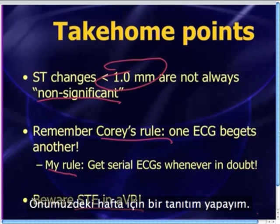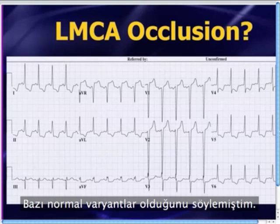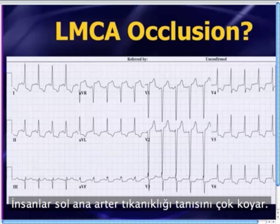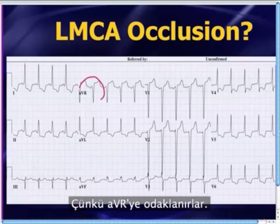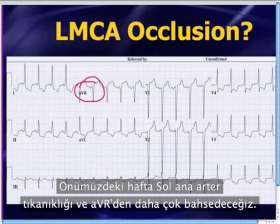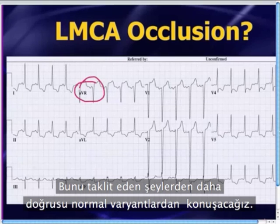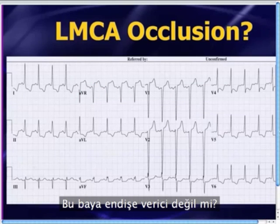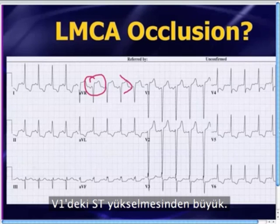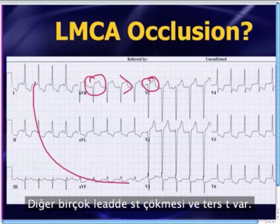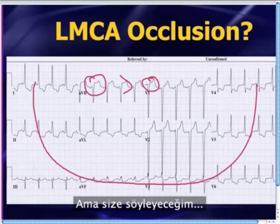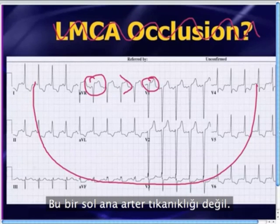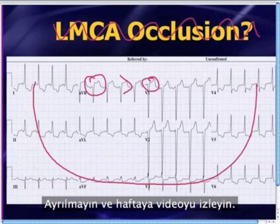Before we're done, a teaser for next week. There are some normal variants when you can have ST elevation in lead AVR, and this is oftentimes forgotten. People now have a tendency to over-call left main occlusion because they're focusing on lead AVR. Next week, we'll talk more about left main occlusions and AVR, and we'll talk about some of the mimics — or normal variants. For example, this 12-lead EKG looks pretty concerning: there's huge elevation in AVR, greater than the ST elevation in V1, with ST depression and flipped T waves in a whole bunch of other leads — and I'm going to tell you this EKG is a normal variant, not a left main coronary artery occlusion.